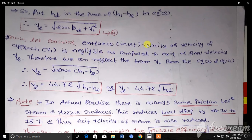Now let us consider the entrance or inlet velocity, we can also call it the velocity of approach V1, is negligible as compared to the exit or final velocity V2. Because at the exit of the nozzle we will get the maximum or highest velocity of steam compared to the inlet section.